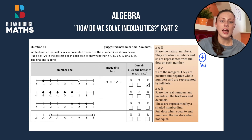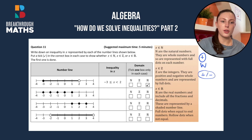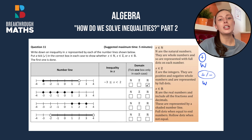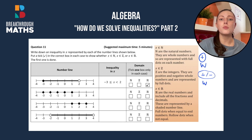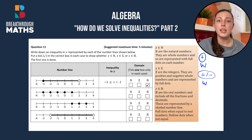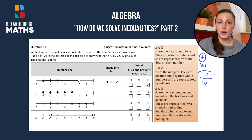Integers are positive or negative whole numbers, which means they're very similar to natural numbers in that they don't include fractions or decimals, but they do include negative numbers and the number zero.